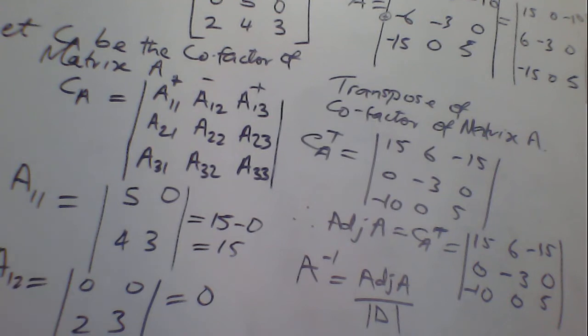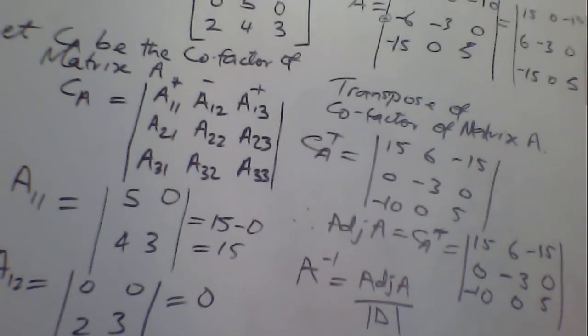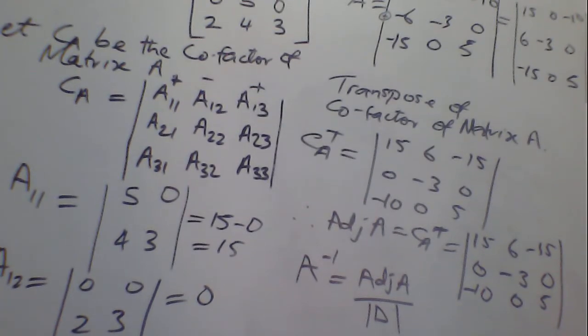So this is where we stop today. We have already gotten the solution, the answer to what the question is all about, to find the adjoint of matrix A. So the adjoint of matrix A is equals to the matrix of 15, 6, minus 15, 0, minus 3, 0, minus 10, 0, 5.